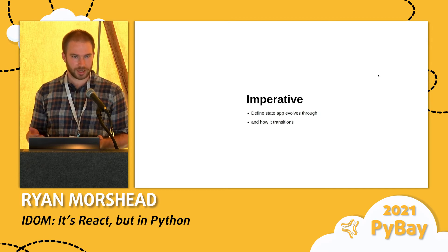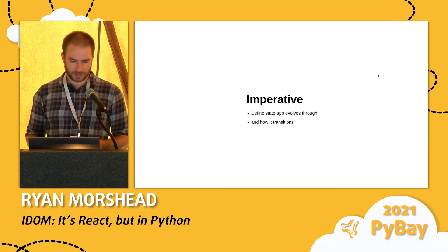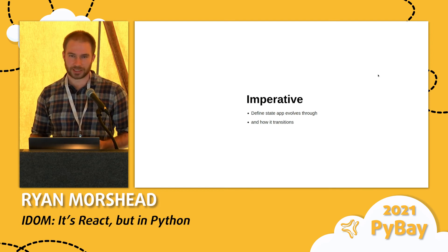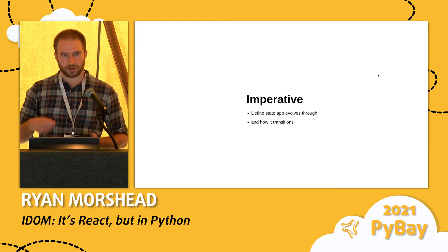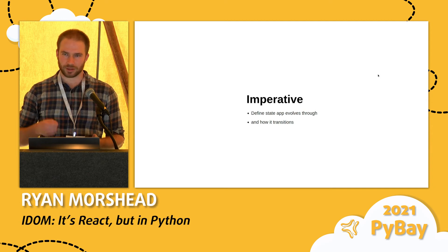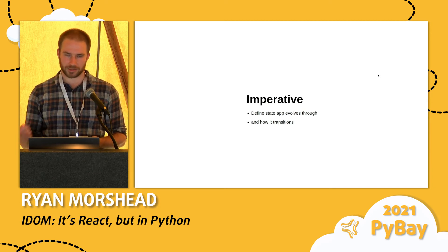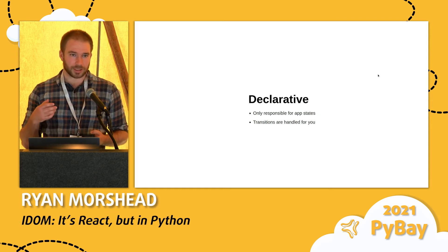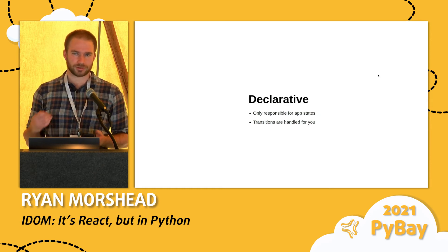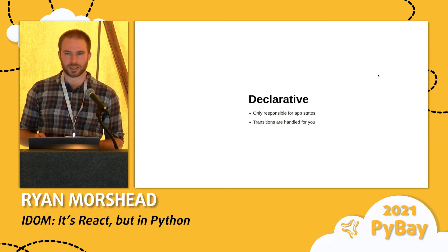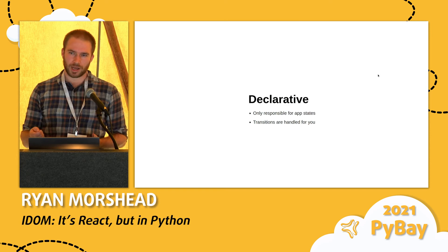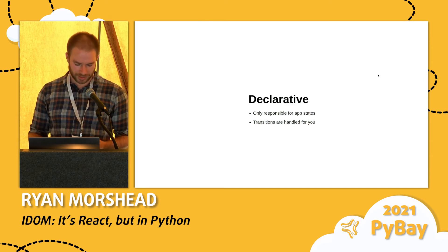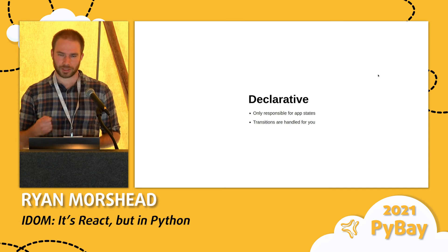What's the difference between these two? In an imperative paradigm, if you're developing a web application, you as the developer are responsible for defining the states your app evolves through, but you're also responsible for dealing with all the details of the transitions between those states — how do you get from A to B? You're forced to have a lot of fine-grained control. In the declarative paradigm, on the other hand, you're only responsible for defining the states your application evolves through, but not the details of the transitions — that is handled for you by the framework or language.